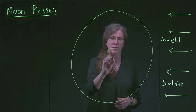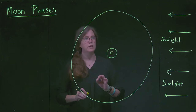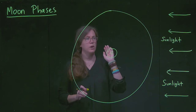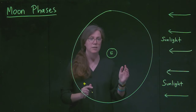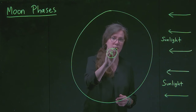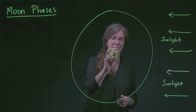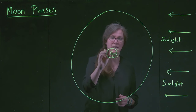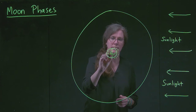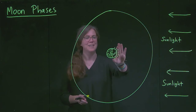We're going to have the Earth here, and we want to recognize that the Earth is experiencing light on the side that is facing the Sun — so this side is lit up and it's daytime, and this side is dark and it's nighttime.